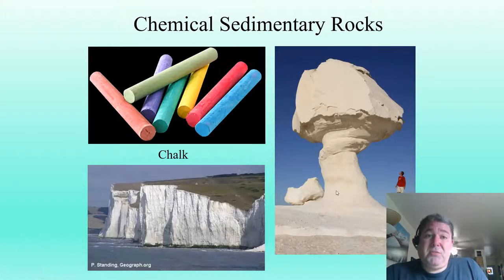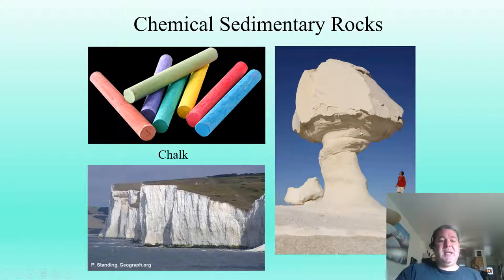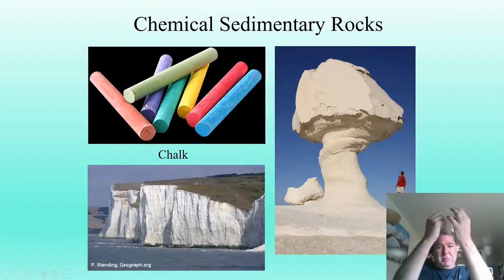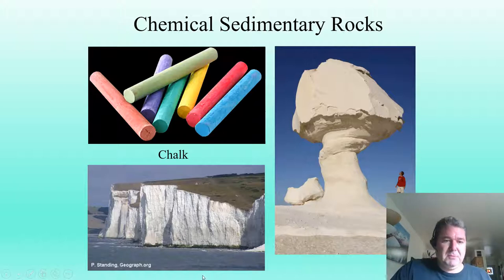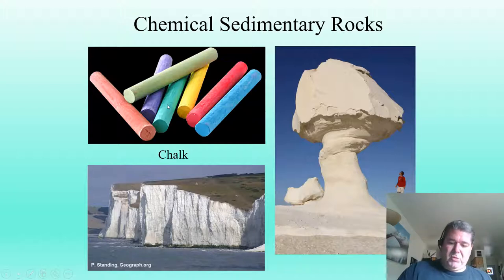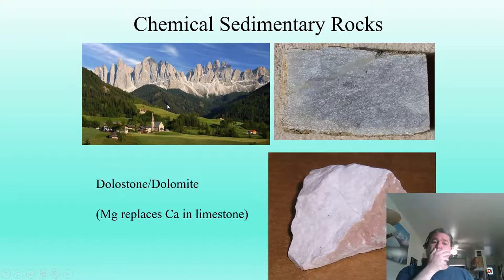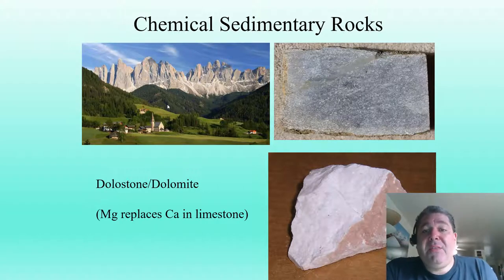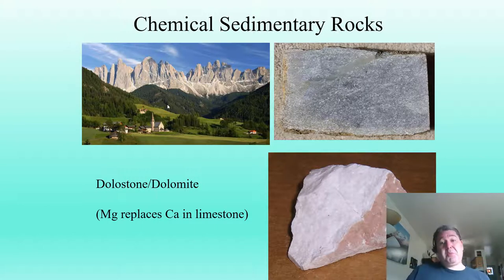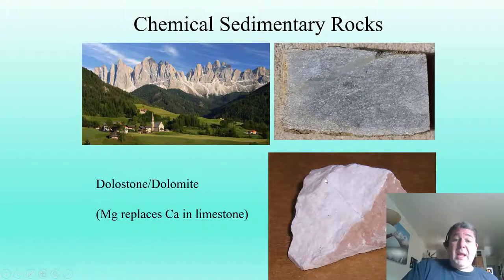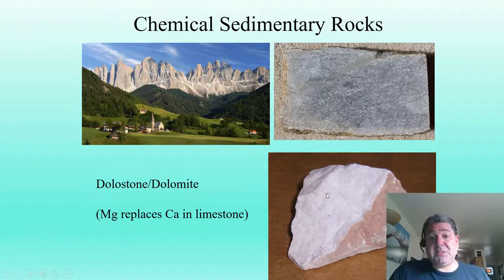Chalk is sometimes called a biochemical rock — it's made of the dead little shells of microscopic organisms. So when you're drawing on the sidewalk with chalk, you're really drawing with the skeletons of dead marine critters. Here are the famous chalk cliffs at Dover. Dolomite, or dolostone, is essentially limestone where some calcium has been replaced with magnesium, making it slightly harder and less susceptible to acid — it doesn't fizz quite as readily.